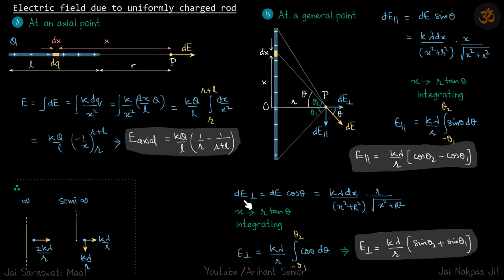Now let's find dE perpendicular. So that should be dE cos theta. dE is again same, k lambda dx by x square plus r square. Cos theta will be r upon root of x square plus r square. So again we will do the same substitution, x equal to r tan theta. And this time we will get cos theta inside. So limits will be same, minus theta 1 to plus theta 2. And we will get our answer, k lambda by r, sin theta 2 plus sin theta 1.